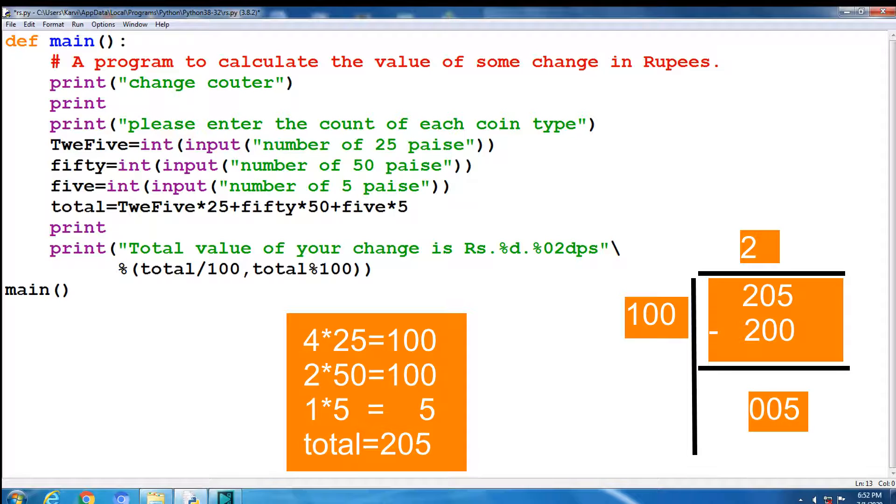Total divided by 100 and total mod 100. Both of these are integer calculations. Why we used %02D here? Zero in front of the width tells Python to pad the value with zeros instead of spaces.